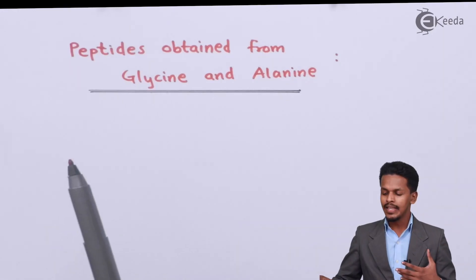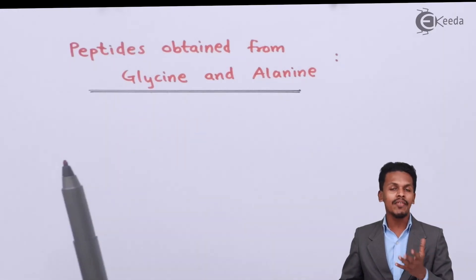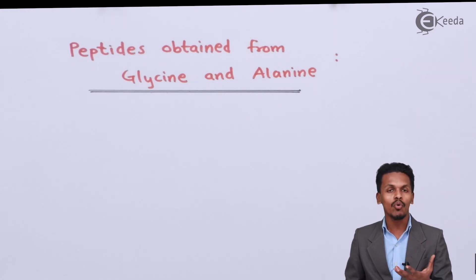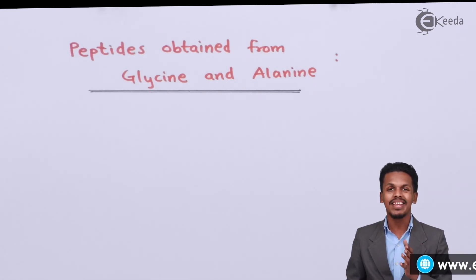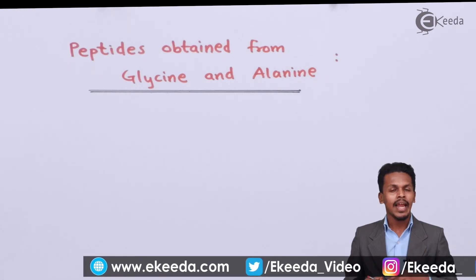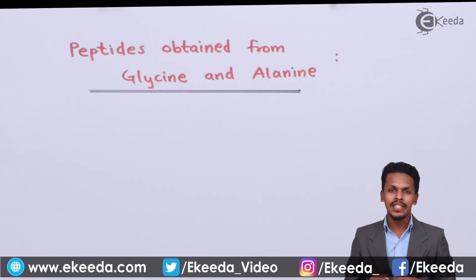In this topic we have to discuss about the possible dipeptides that we could obtain from glycine and alanine. And there are four possibilities.